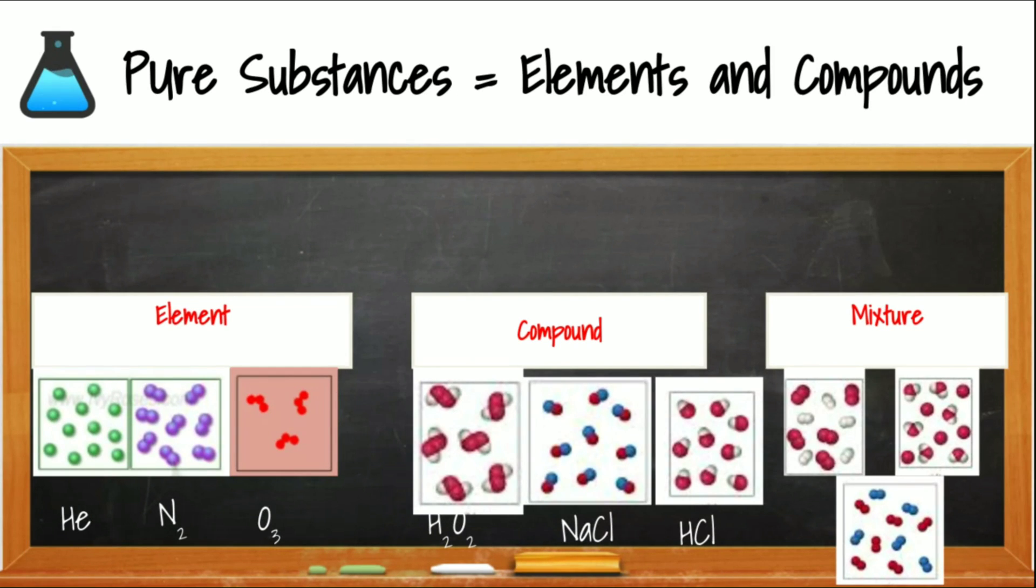As a review, you can see that both elements and compounds are considered pure substances because their particle diagrams only have one type of particle, even if the particle in a compound has more than one type of element. You can look at the H2O2, or hydrogen peroxide compound, and what you can notice is that every particle has two red oxygens and two white hydrogens. Or if we look at the sodium chloride, every particle has one red sodium and one blue chlorine.